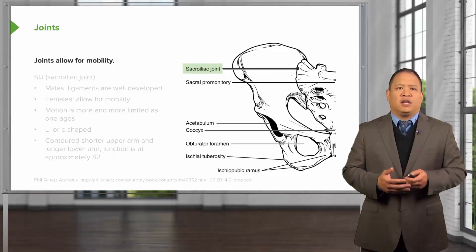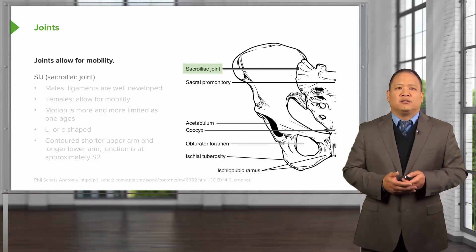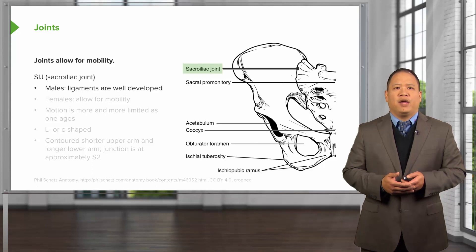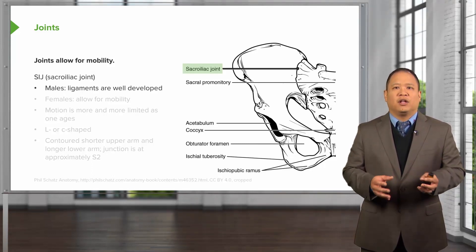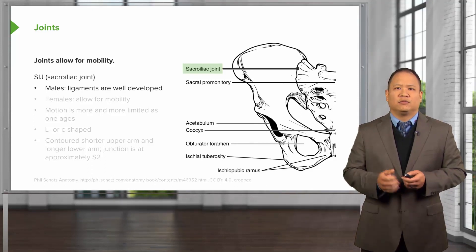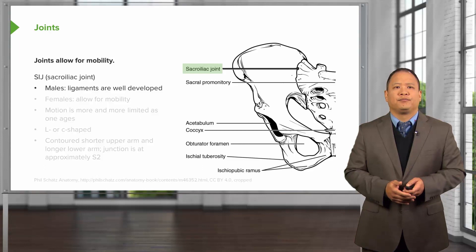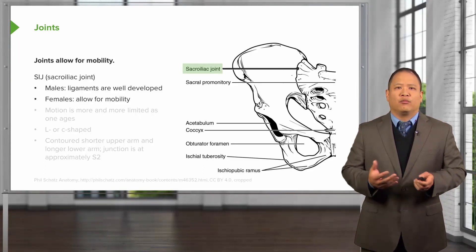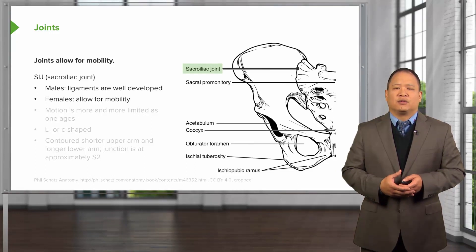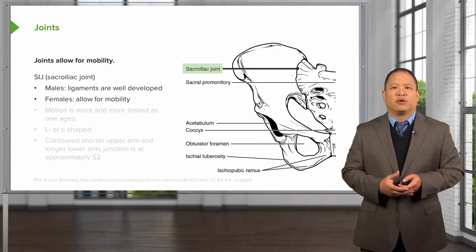The SI joint is a joint where the sacrum articulates with the innominate. This joint has a little bit of play to allow for mobility. In males, the SI joint is actually a little bit more well developed — the ligaments are a little bit stronger and the pelvis is a little bit tighter. In females, the pelvis is a little bit wider and the ligaments are a little bit more lax, to assist with the changes in motion that have to occur during childbirth.